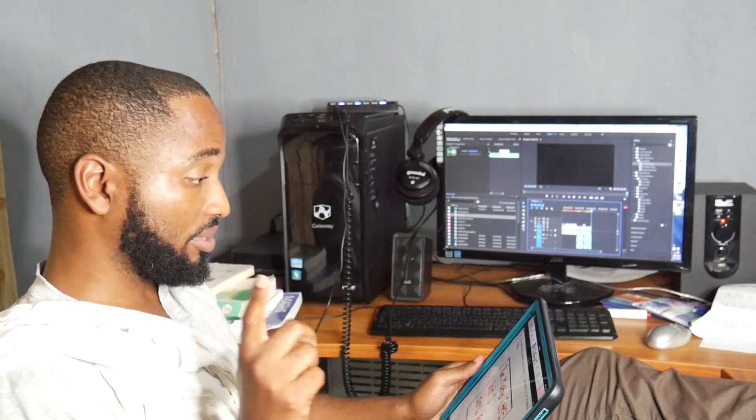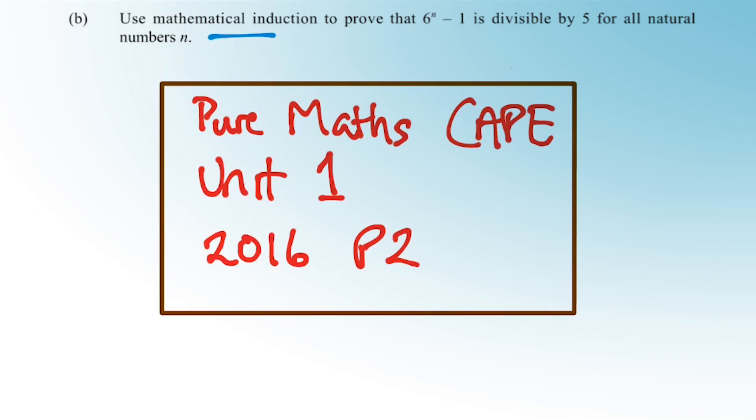Understanding the concept is half of the battle. The next half will be practicing the mathematical method behind induction — doing questions over and over so that you get the hang of that whole three-step process. There are some different scenarios where we can use induction as well. I'm going to do one example in this video: use mathematical induction to prove that 6^n − 1 is divisible by 5 for all natural numbers n.